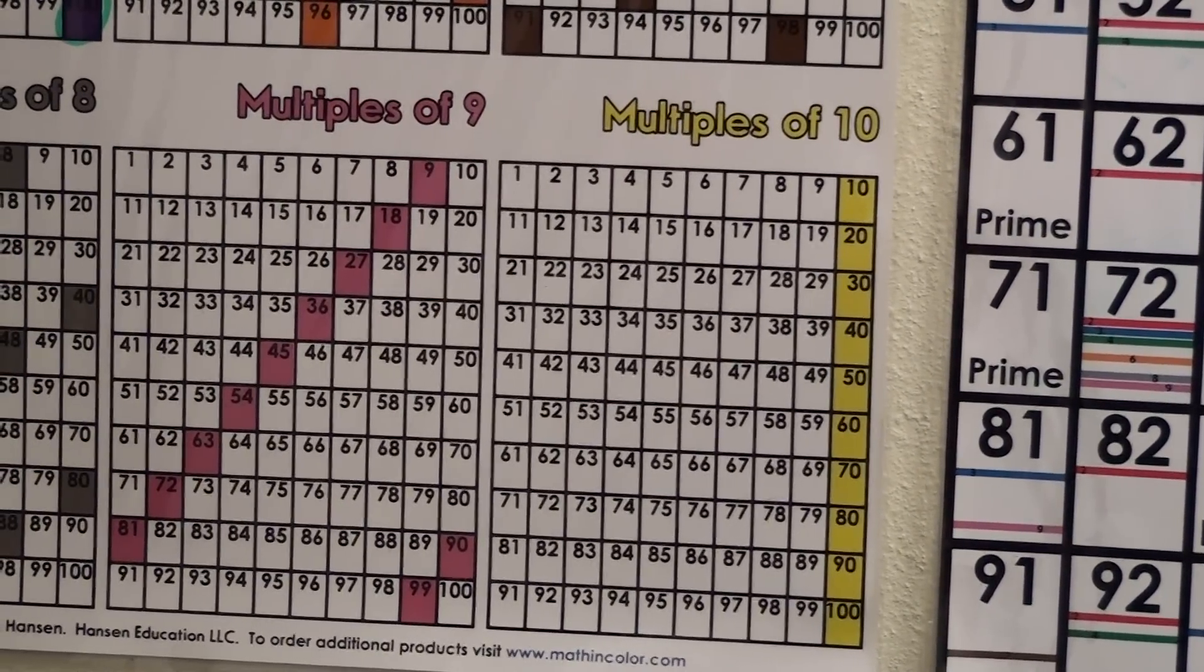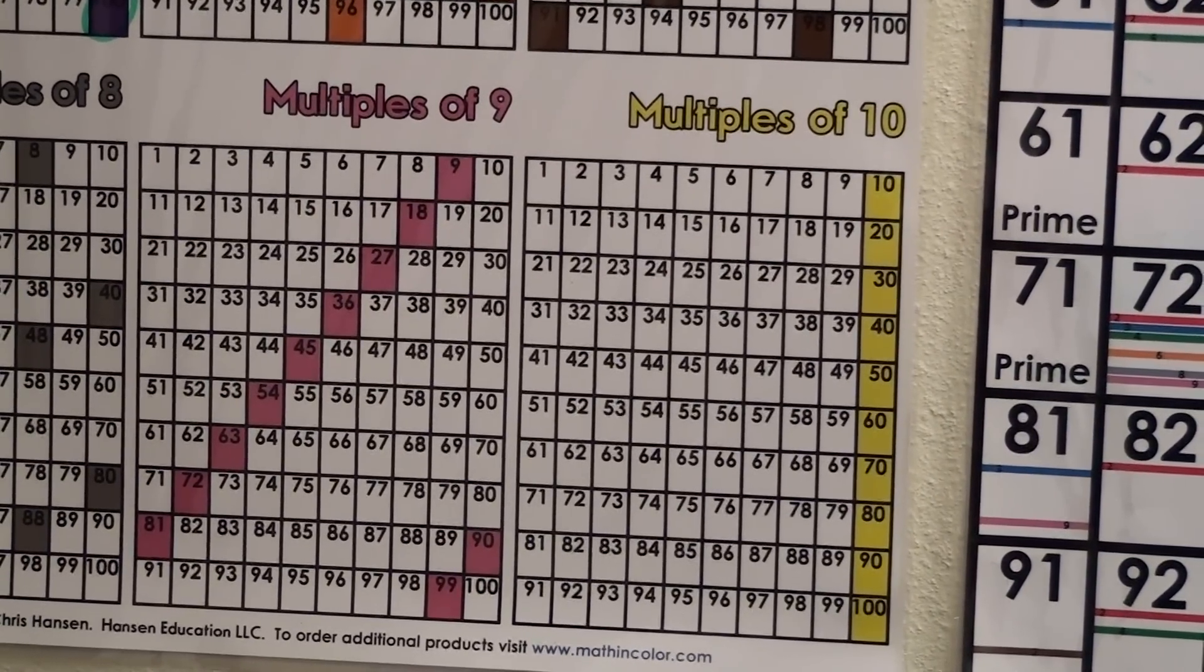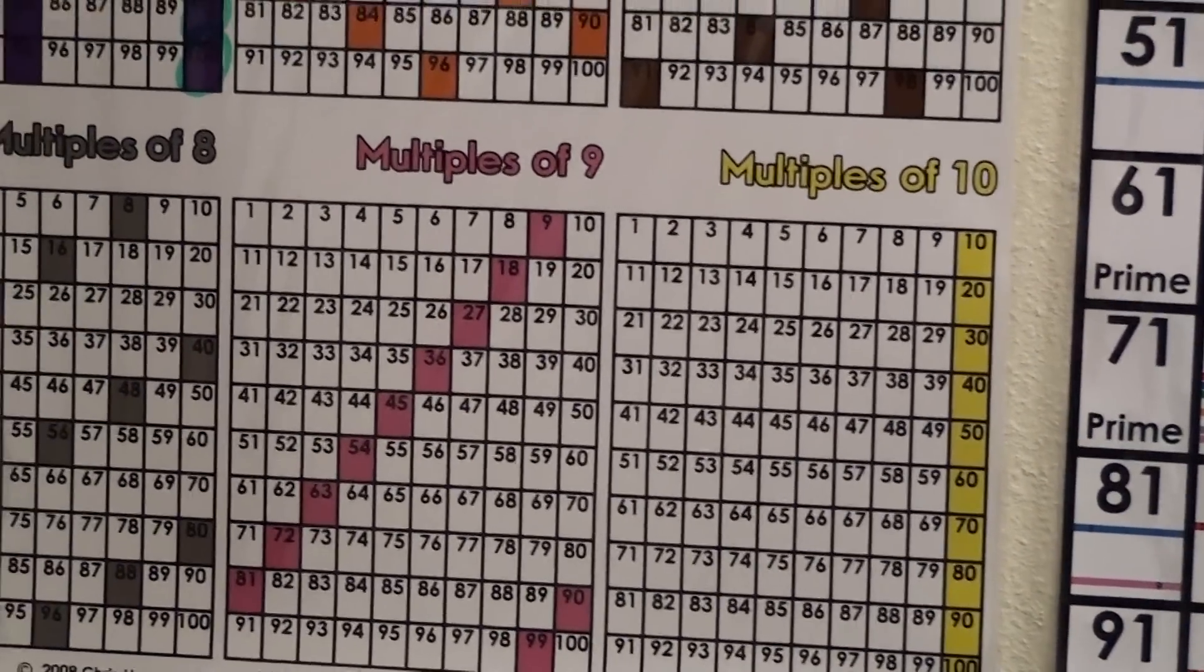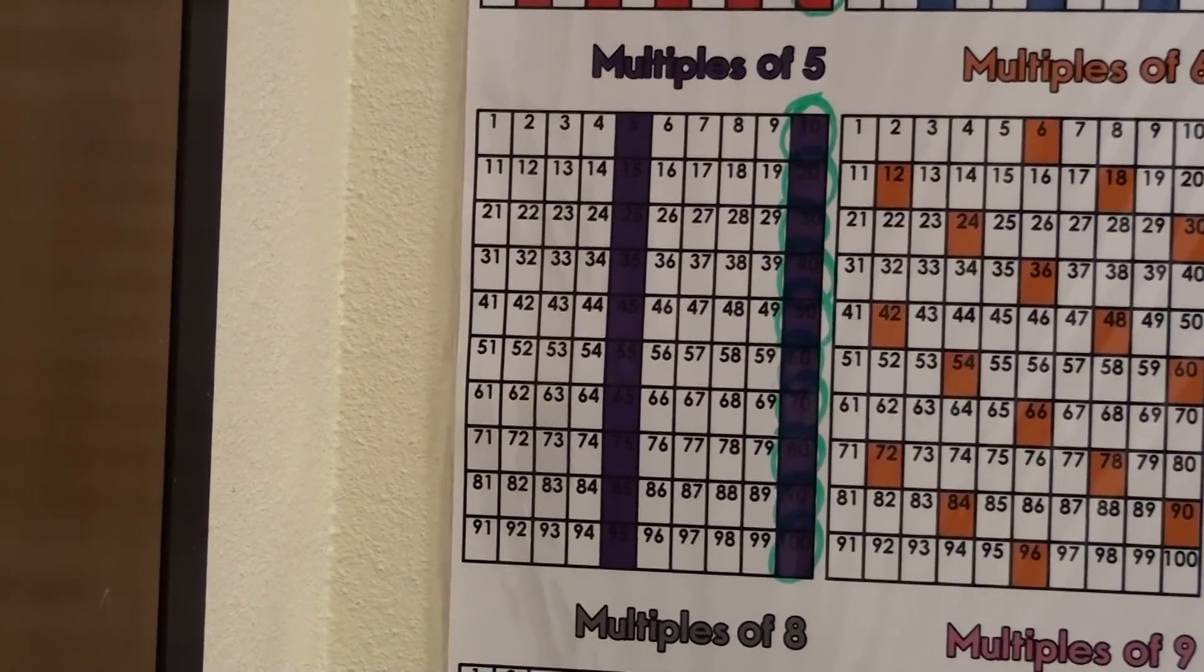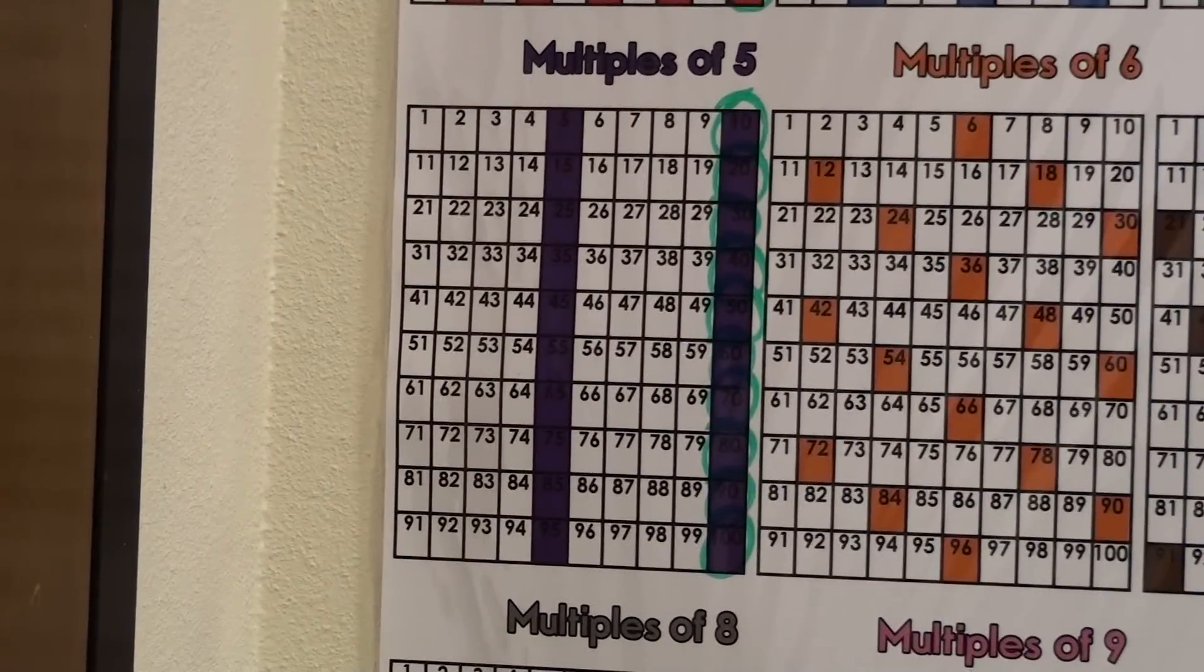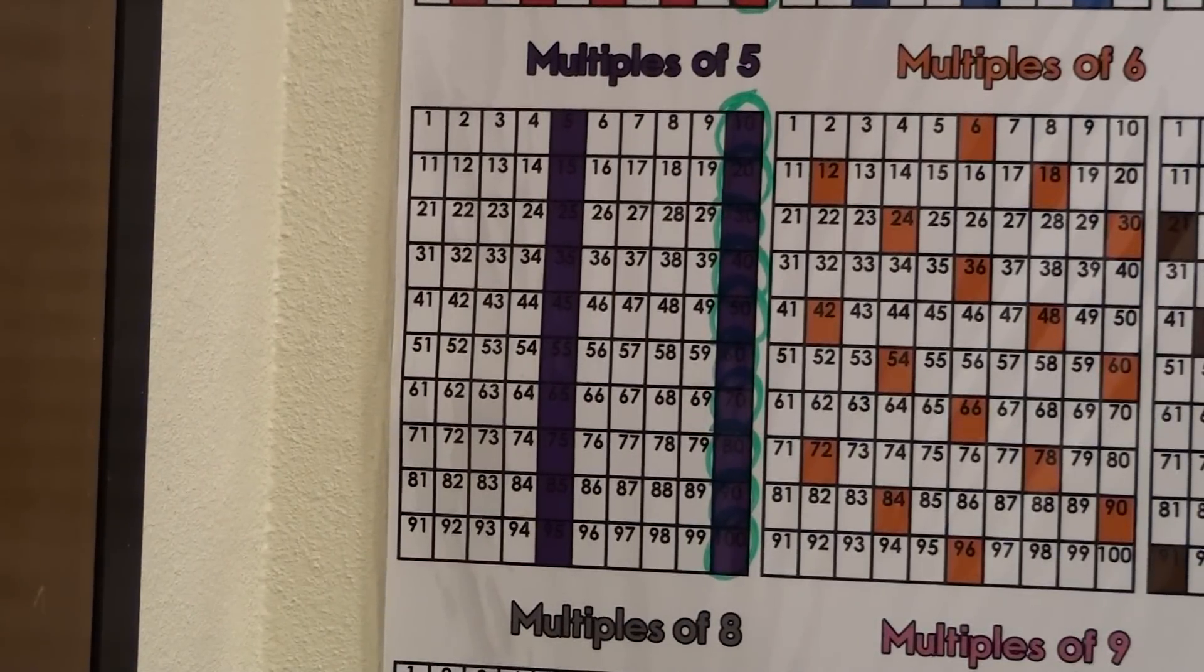As you can see, yellow boxes or yellow highlights have identified all the multiples of 10. As I roll up to the multiples of 5, you can see how all of them have been circled that are also multiples of 10.